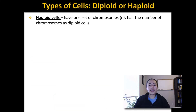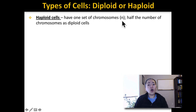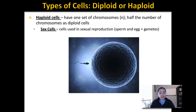Haploid cells, on the other hand, have only one set of chromosomes, so we usually label them with just a single N. Haploid cells in an organism will always have half the number of chromosomes as diploid cells in that organism. The only haploid cells in your body are your sex cells, which contain only half of the DNA found in the other cells in your body. Sex cells are also called sperm, eggs, or gametes, and they are used for sexual reproduction.